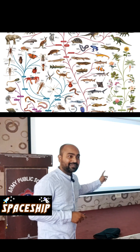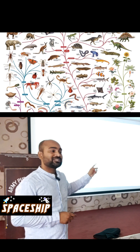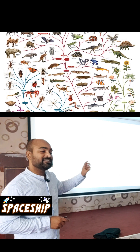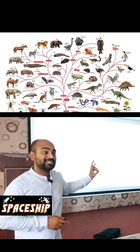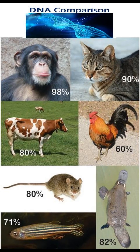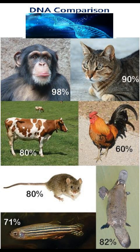This is the tree of life created by scientists based on genetic differences in the DNA map. 98% of our DNA is similar to a chimpanzee, 80% to a cow, 60% to a chicken, 80% to a mouse, 82% to a platypus, and 71% of our DNA is the same as that of a zebrafish.